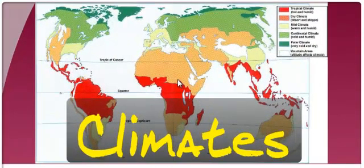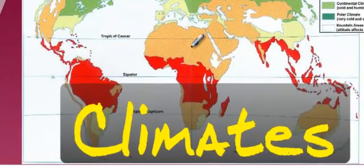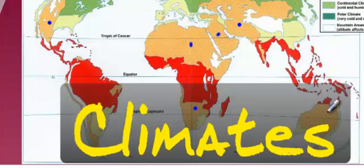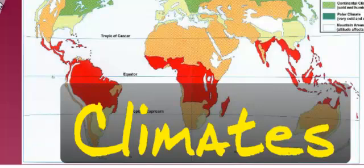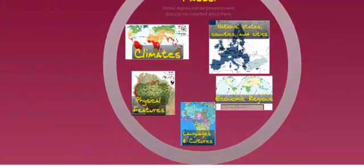Climates can be proven to exist. You can go anywhere here and collect data on the temperature and rainfall of these places and prove they're similar — it is dry, it is hot, and they share that in common. Let's call them the same region.